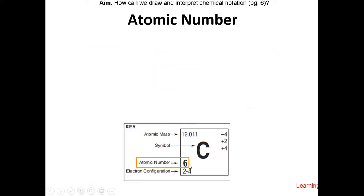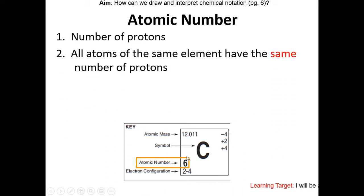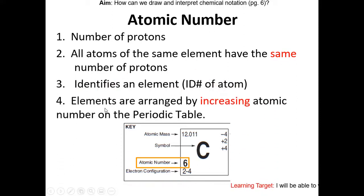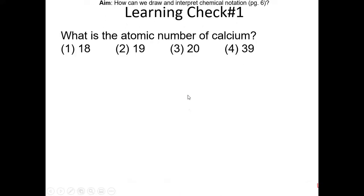Now let's look at atomic number. Atomic number stands for the number of protons. All atoms of the same element have the same number of protons. Think of the atomic number as an ID number for the atom. Elements are arranged by increasing atomic number on the periodic table. What is the atomic number of calcium? Pause the video and resume once you have the answer.